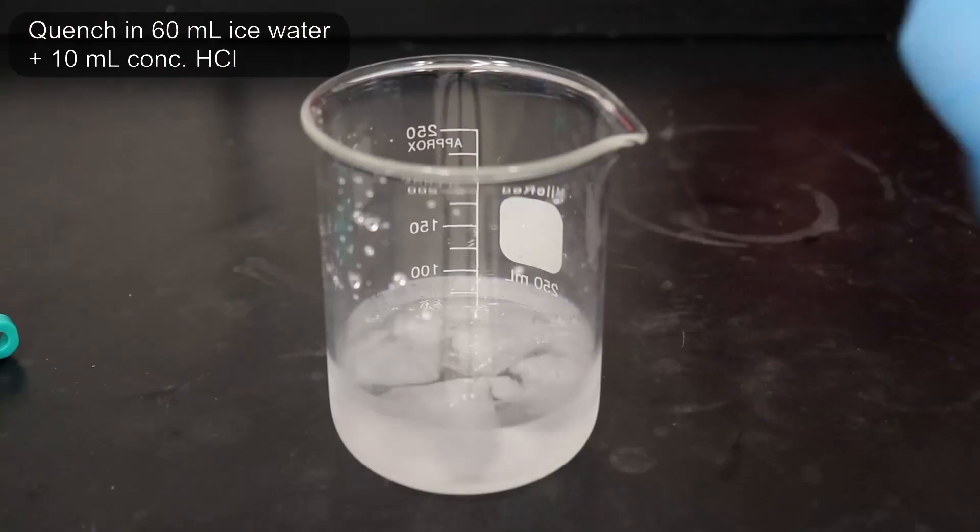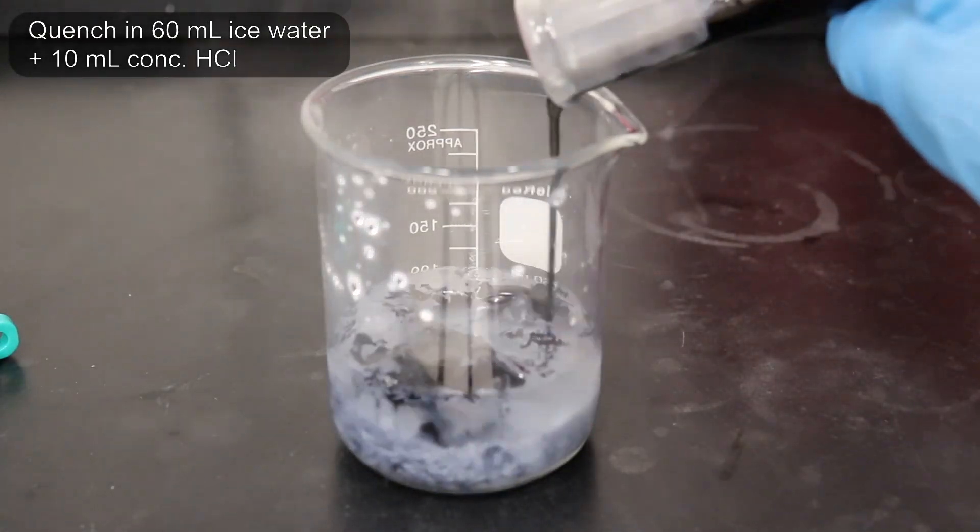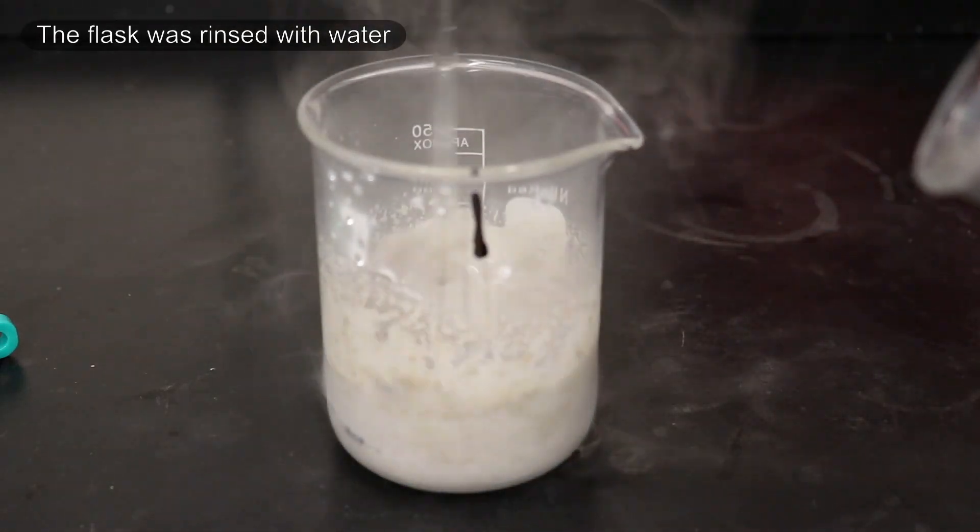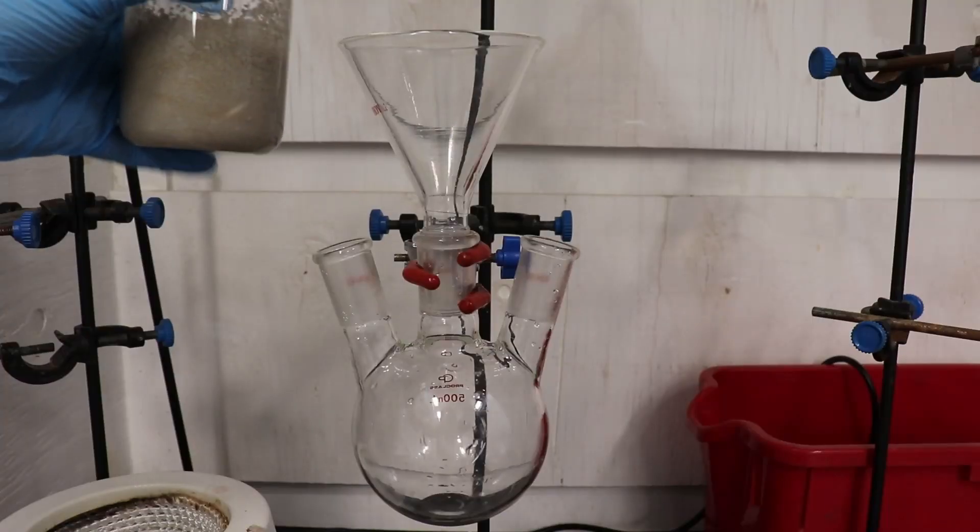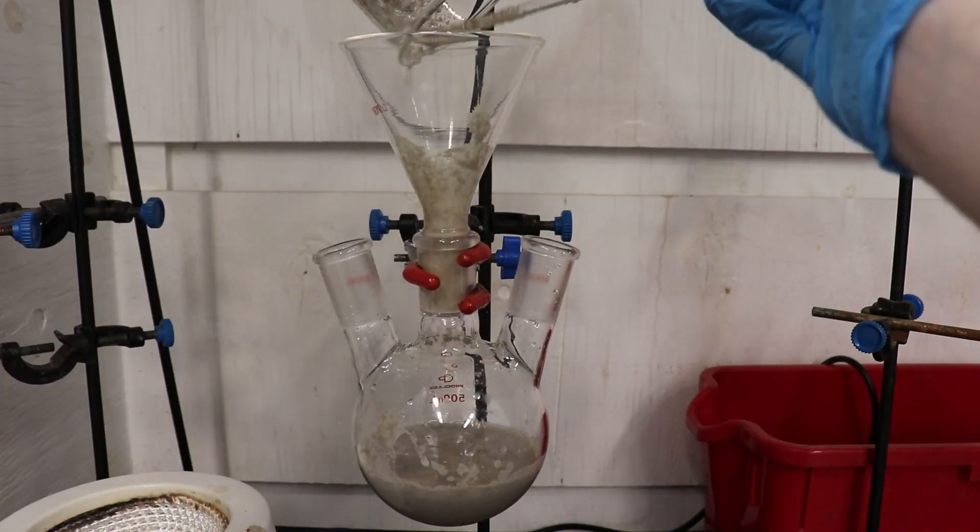The reaction mixture was then quenched by pouring it into a mixture of 60 grams of ice water with 10 milliliters of concentrated hydrochloric acid. And now I have to separate the product from the quenched reaction mixture.